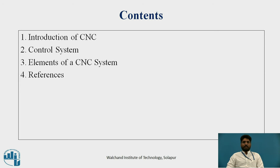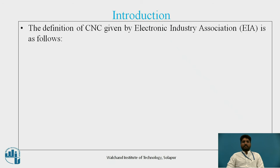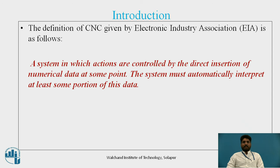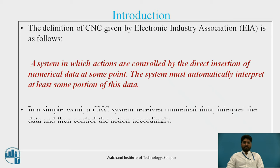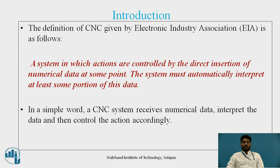Content covered includes: introduction of CNC, control system, elements of the CNC system, and references. Introduction: The definition of CNC given by the Electronic Industry Association (EIA) is as follows — a system in which actions are controlled by the direct insertion of numerical data at some point, and the system must automatically interpret at least some portion of this data. In simple words, a CNC system receives numerical data, interprets the data, and then controls the action accordingly.